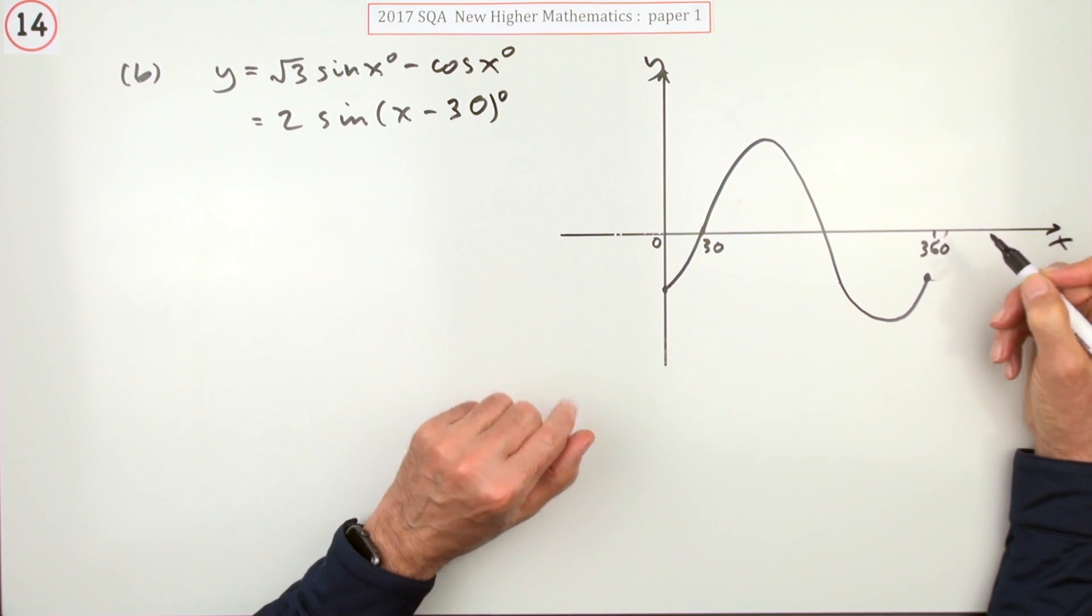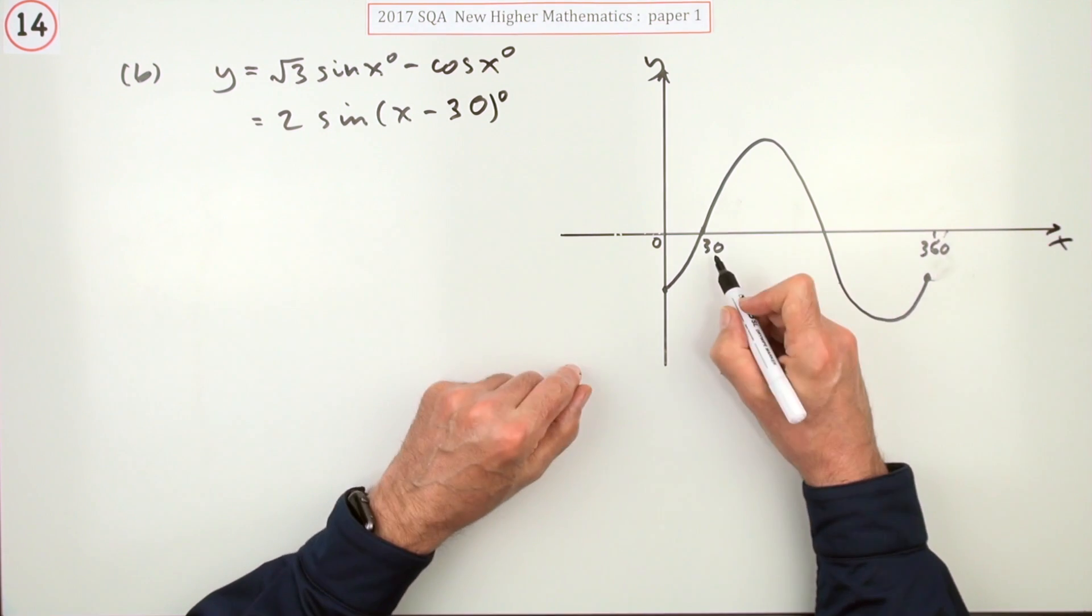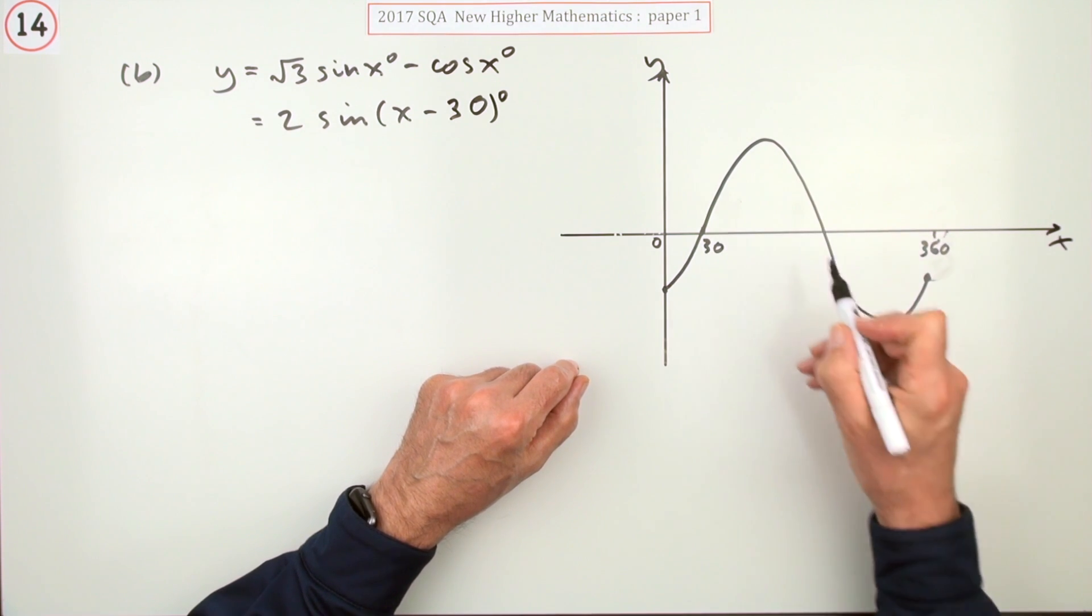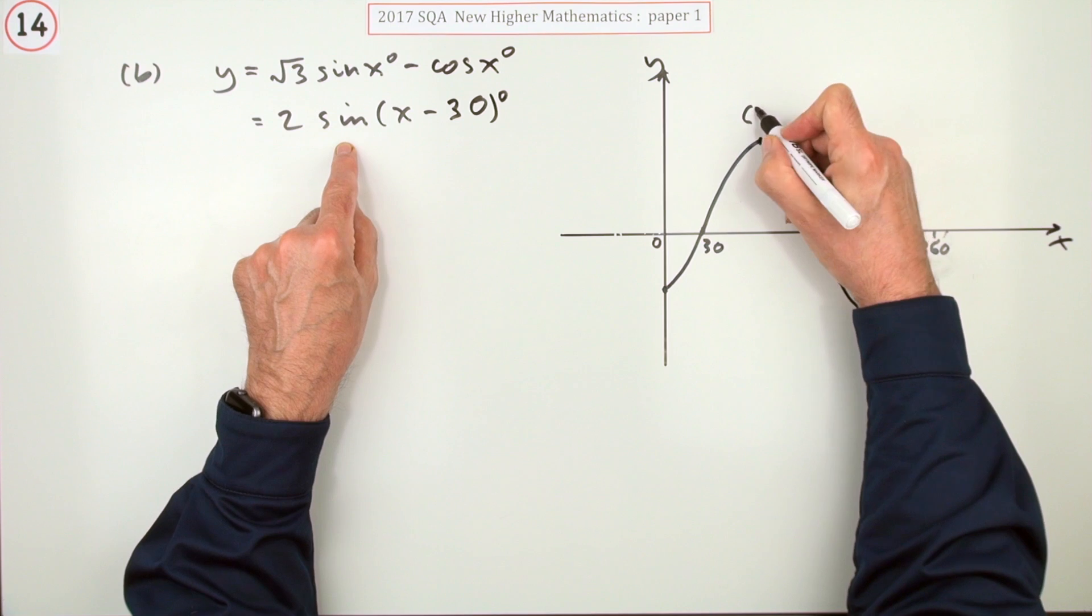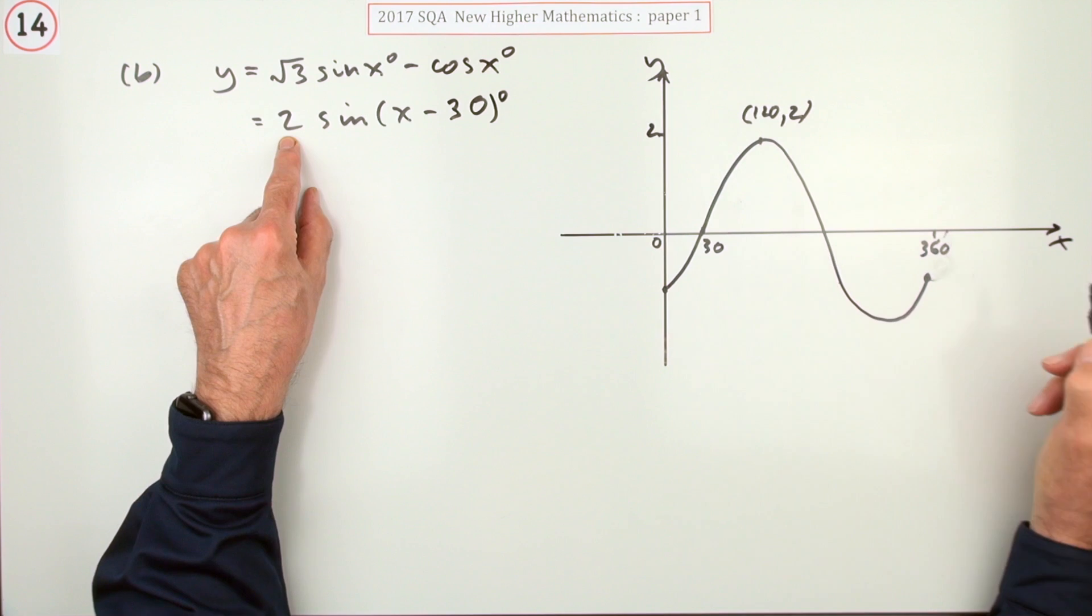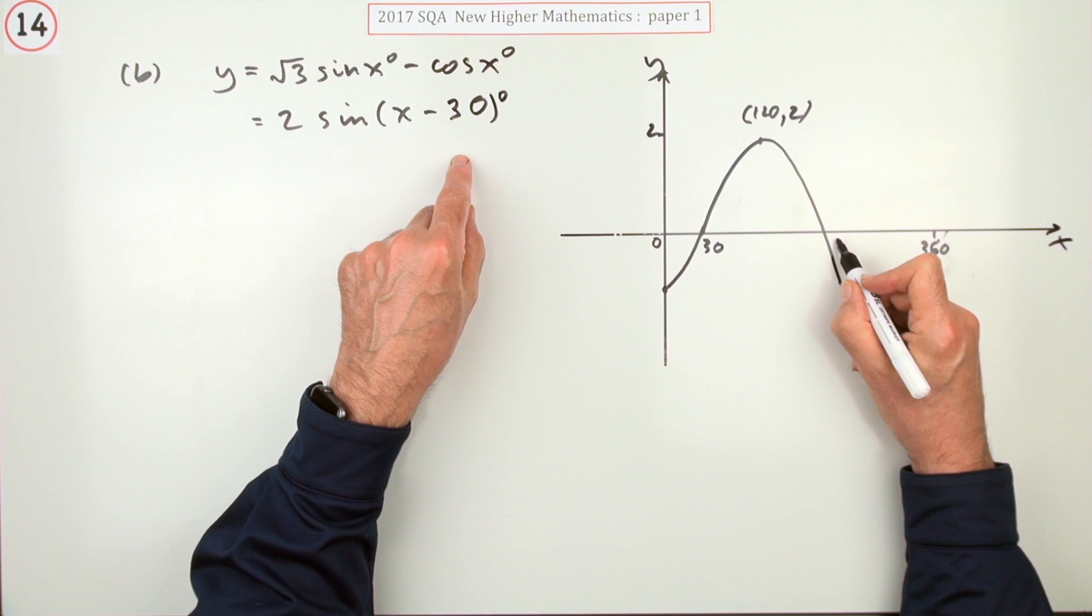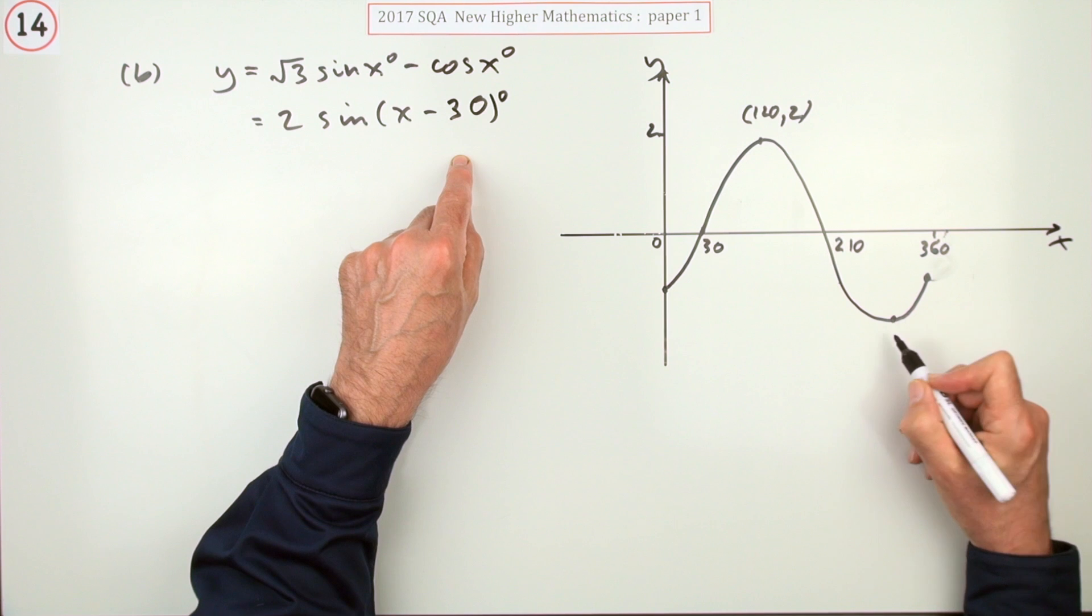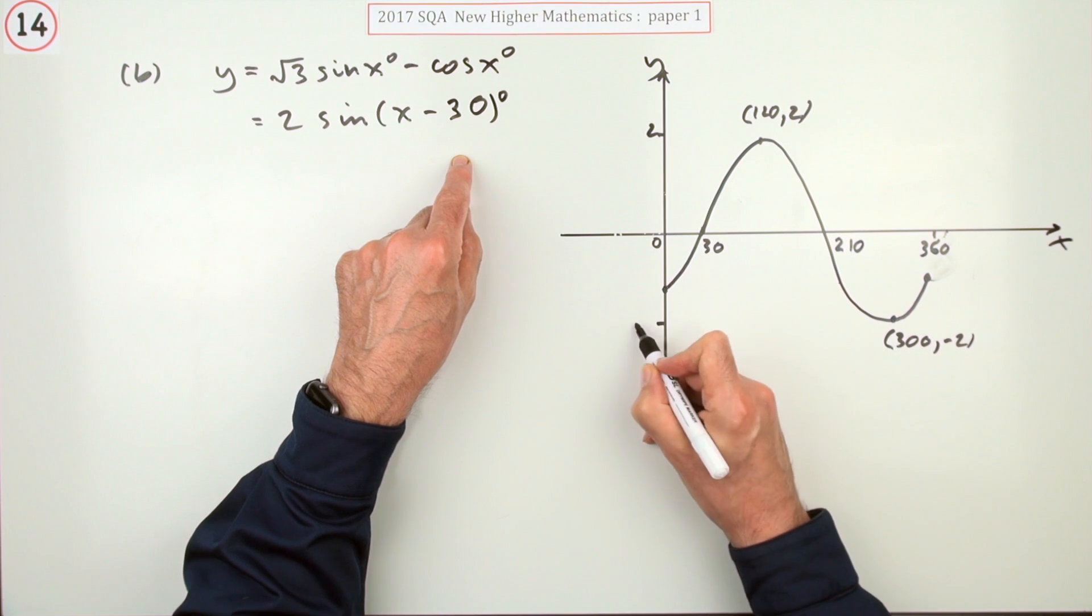That's 360. You're sketching a graph, so that means you should show where does it cut the axis and where are the turning points. Well, all these parts here are easy because you know where they are for a sine graph. It should hit the top at 90, it's going forward 30, so it's hitting the top at 120, and the amplitude is 2, so it's got as high as 2. It should have crossed the axis again at 180, it's gone forward 30, so it's going to cross again at 180 plus 30, which is 210. It should be at the bottom at 270, so it's going to hit the bottom at 30 more, 300, and the bottom's down at negative 2.